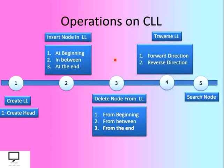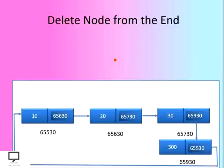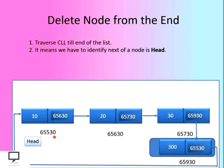Now the last part: delete operation from the end of the list. If we want to delete a node from the end of the list, let's consider we have four nodes and we want to delete the last one. We traverse the circular linked list till the end. The end means the next of that node points to the head — 655300 is the address of the head node — so we traverse till that node starting from the head.